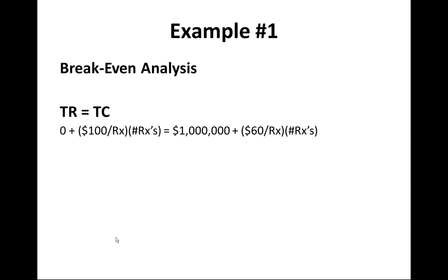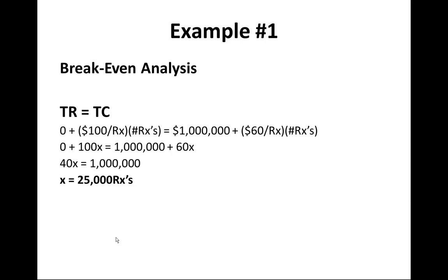This is basic algebra. Number of prescriptions is the same variable on both sides, so let's call that X. We have: 0 + 100X = 1,000,000 + 60X. Subtract 60X from the right side and get 40X = $1,000,000. So X = 25,000 — we have to sell 25,000 prescriptions before total revenue equals total cost.